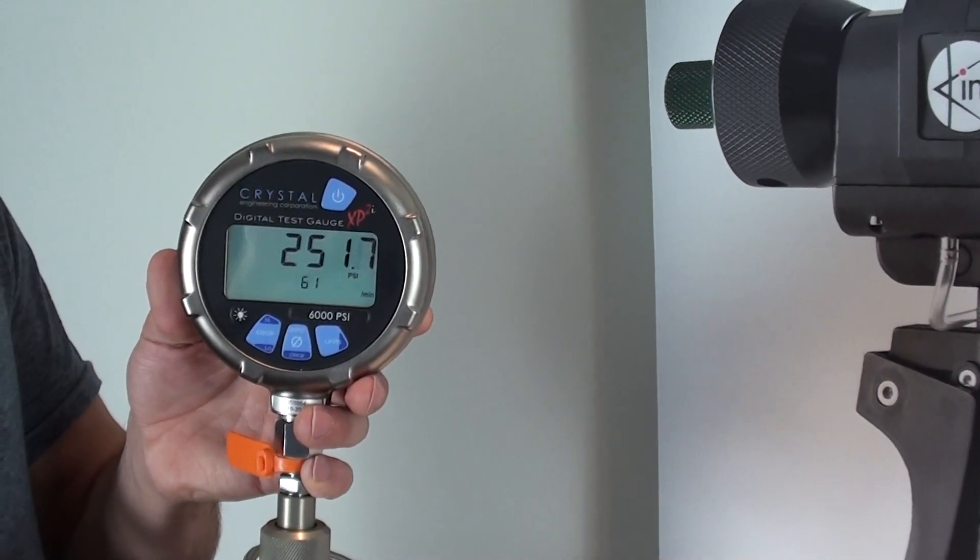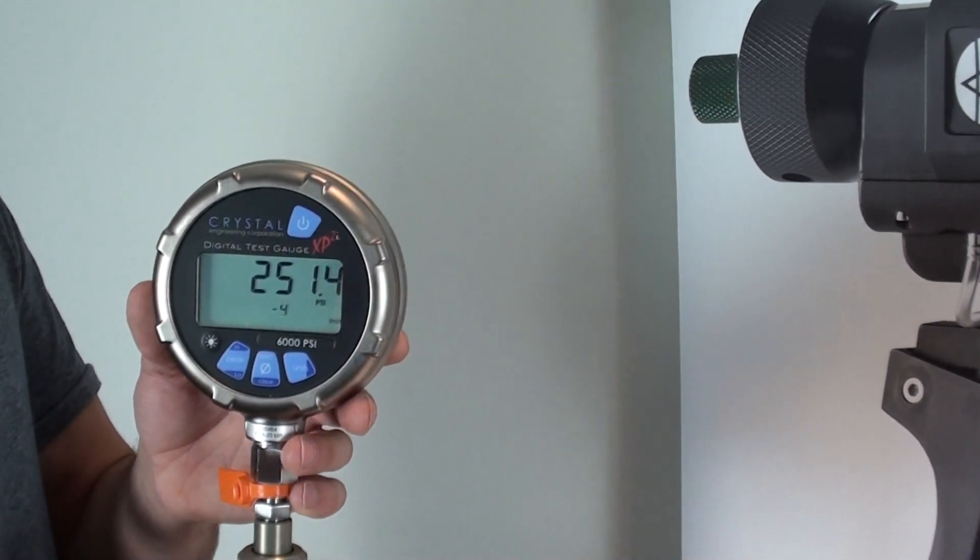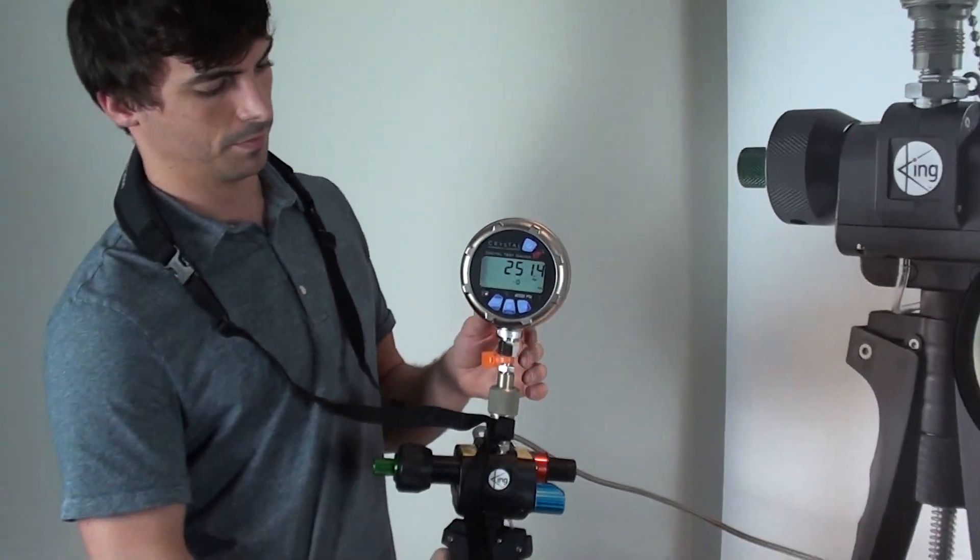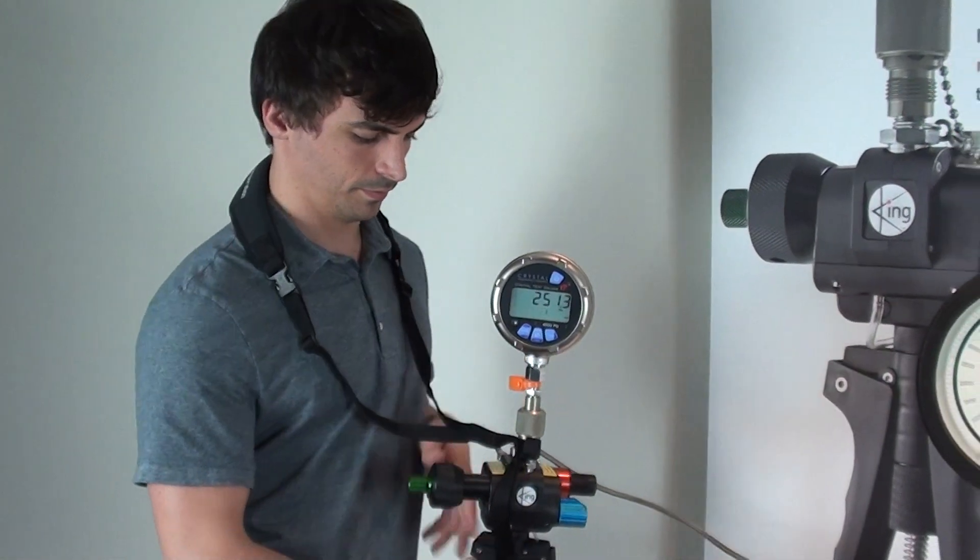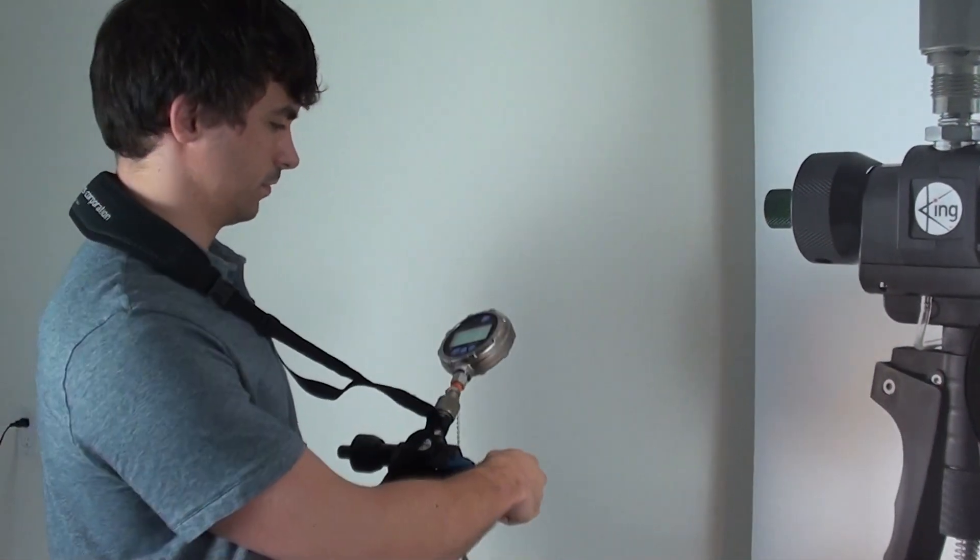So as you can see, pretty easy to get up to 250 PSI. But to calibrate our gauge at a higher pressure, we're going to need to switch to hydraulic mode. So what we're going to do first of all, we're going to vent the pump.